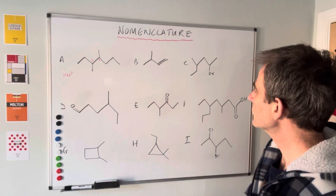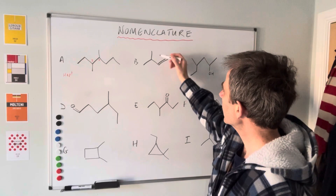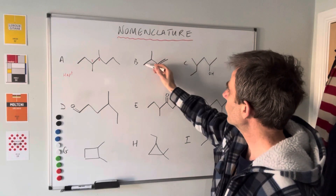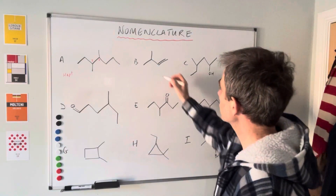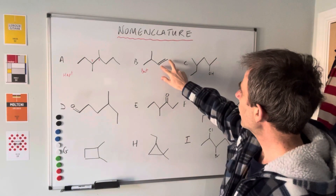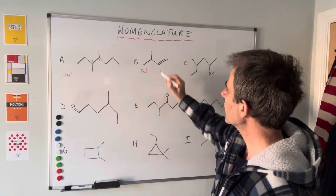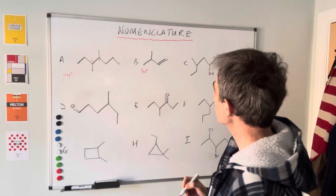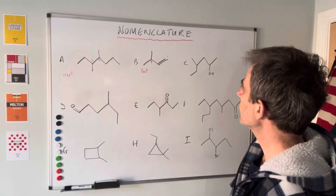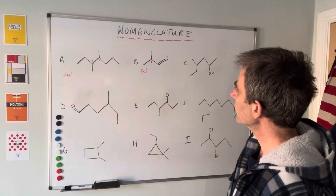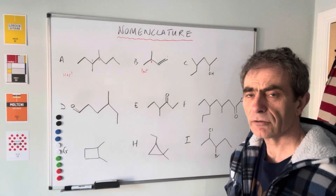Compound B is an alkene, so its suffix is -ene. The longest continuous chain — we can either go this way one, two, three, four, or one, two, three, four — so either way it's four: 'but'. The carbon-carbon double bond starts at one if we count from the lower end, so it's but-1-ene. The methyl group is on carbon number three, so this is called 3-methylbut-1-ene.